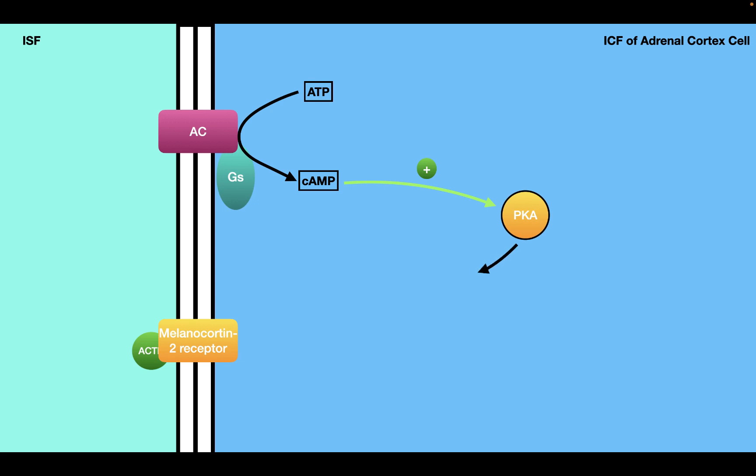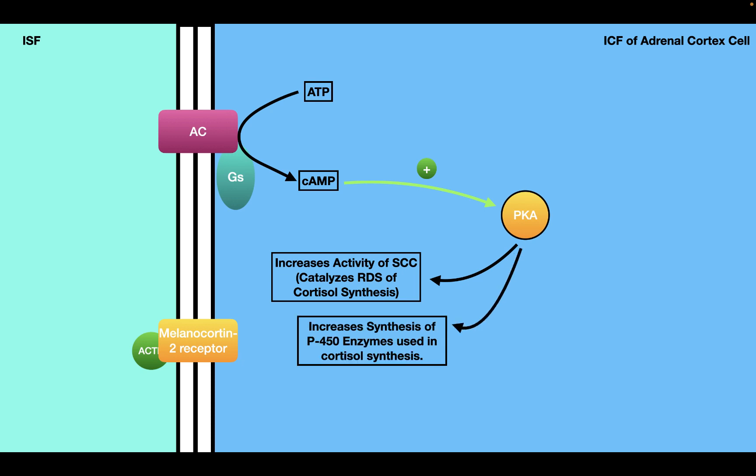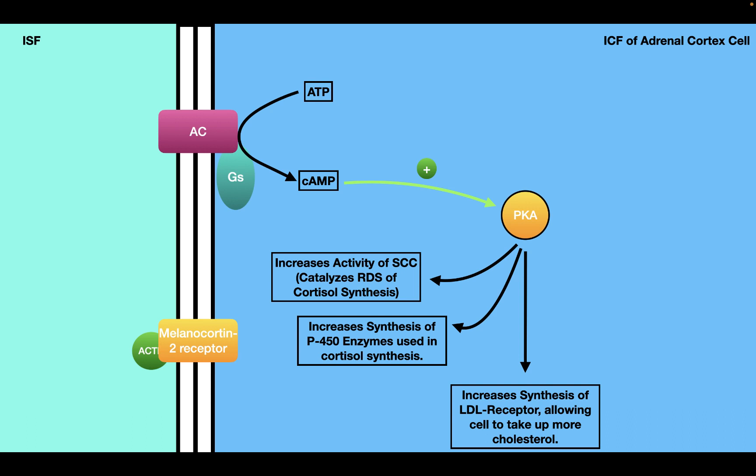The first effect of protein kinase A is that it increases the activity of the side chain cleavage enzyme — the enzyme that catalyzes the rate-determining step of cortisol synthesis — thereby increasing cortisol synthesis. Protein kinase A also increases the synthesis of P450 enzymes used in cortisol synthesis, as well as the synthesis of LDL receptors, allowing cells to take up more cholesterol. Since cortisol is derived from cholesterol, increasing cholesterol availability increases cortisol production.